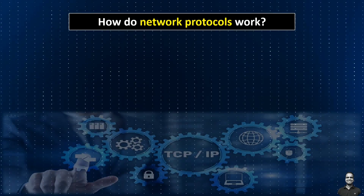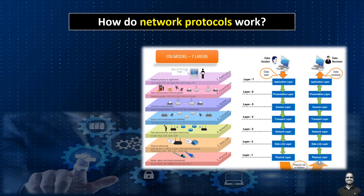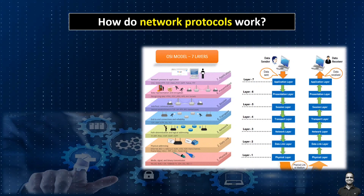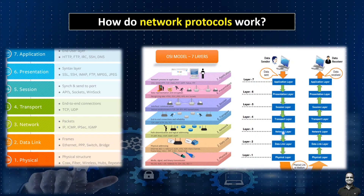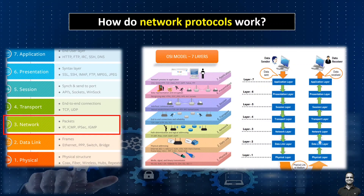The OSI model — Open Systems Interconnection model — demonstrates how computer systems communicate over a network. It is a seven-layer model that visualizes the communication processes between two network devices across different layers. Network protocols split the communication processes into discrete tasks across each OSI model layer, and one or more protocols operate at every layer. For example, the Internet Protocol routes data by managing information such as data packets, source address, and destination to enable network-to-network communication, so it is referred to as a network layer protocol.